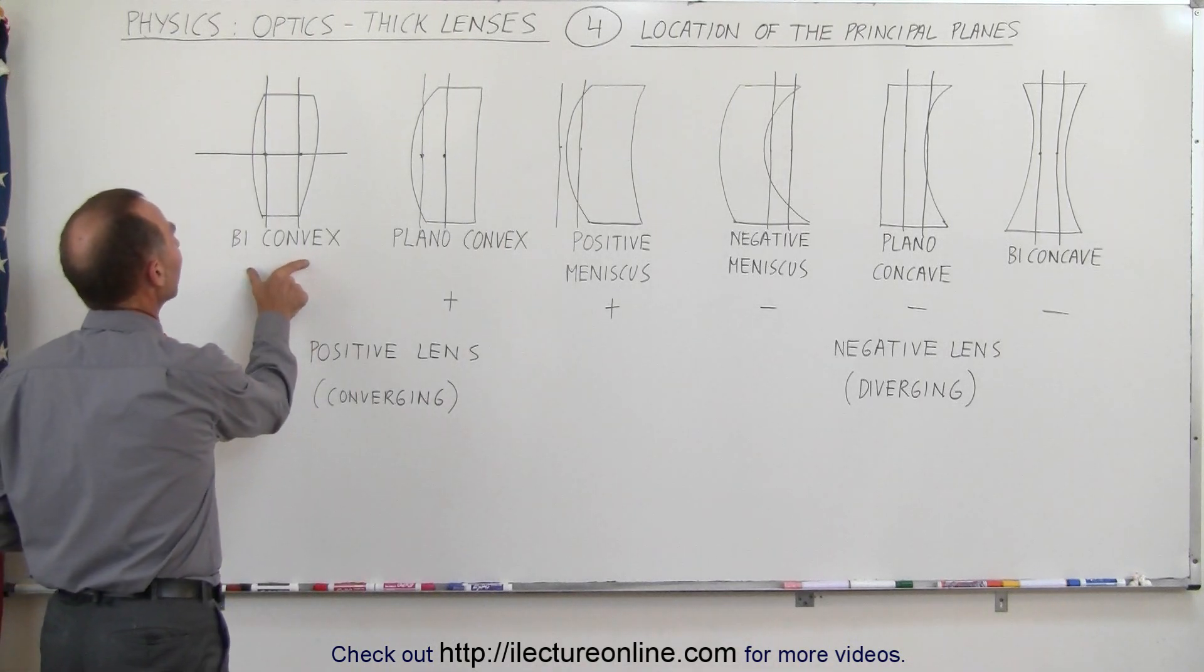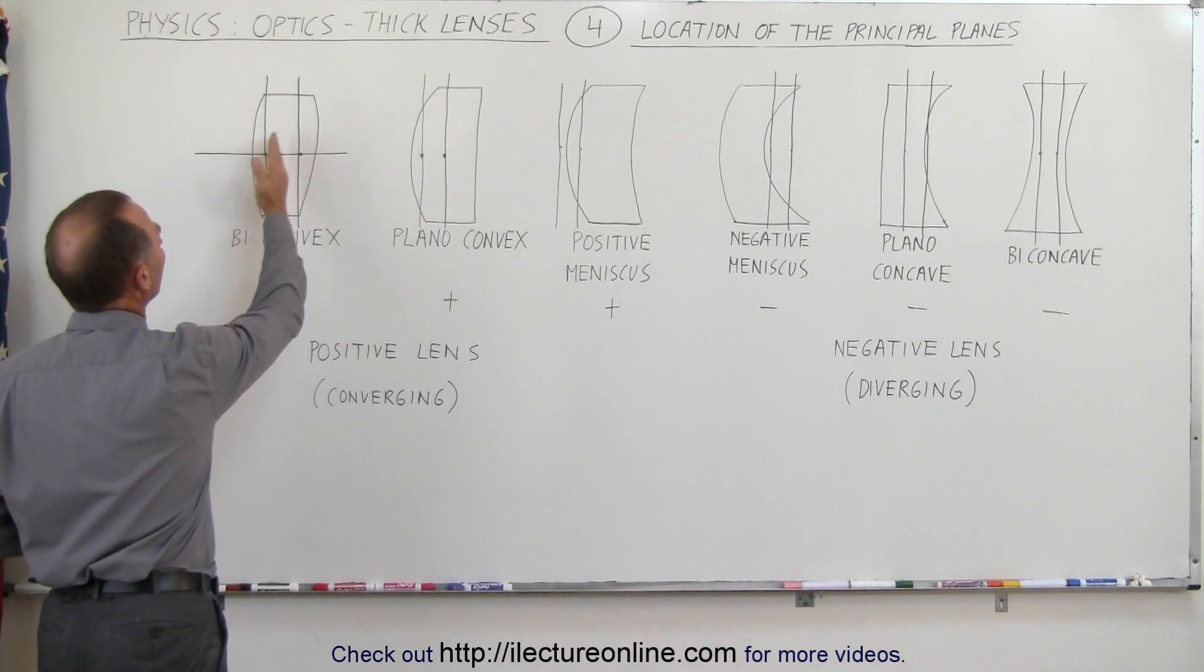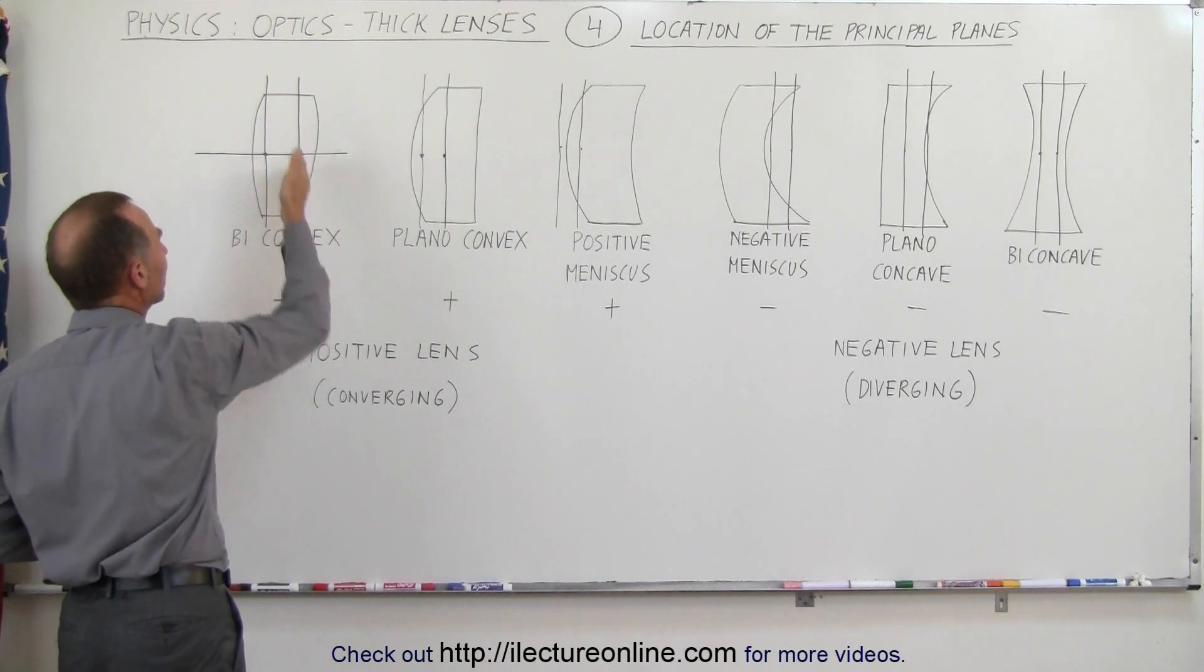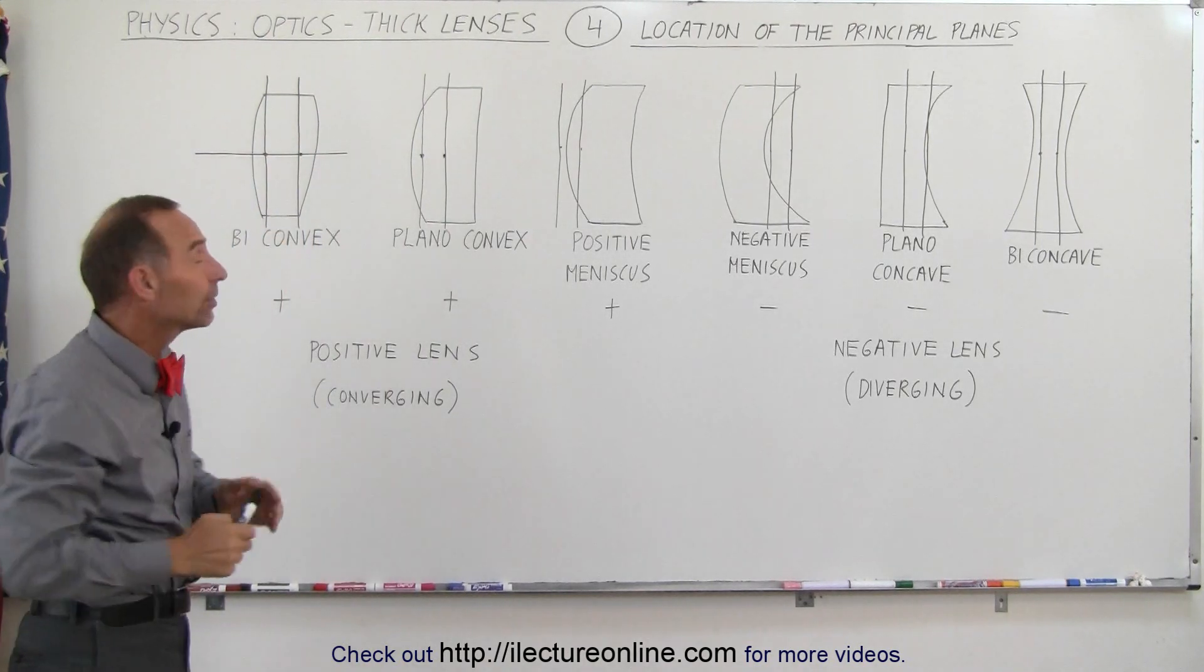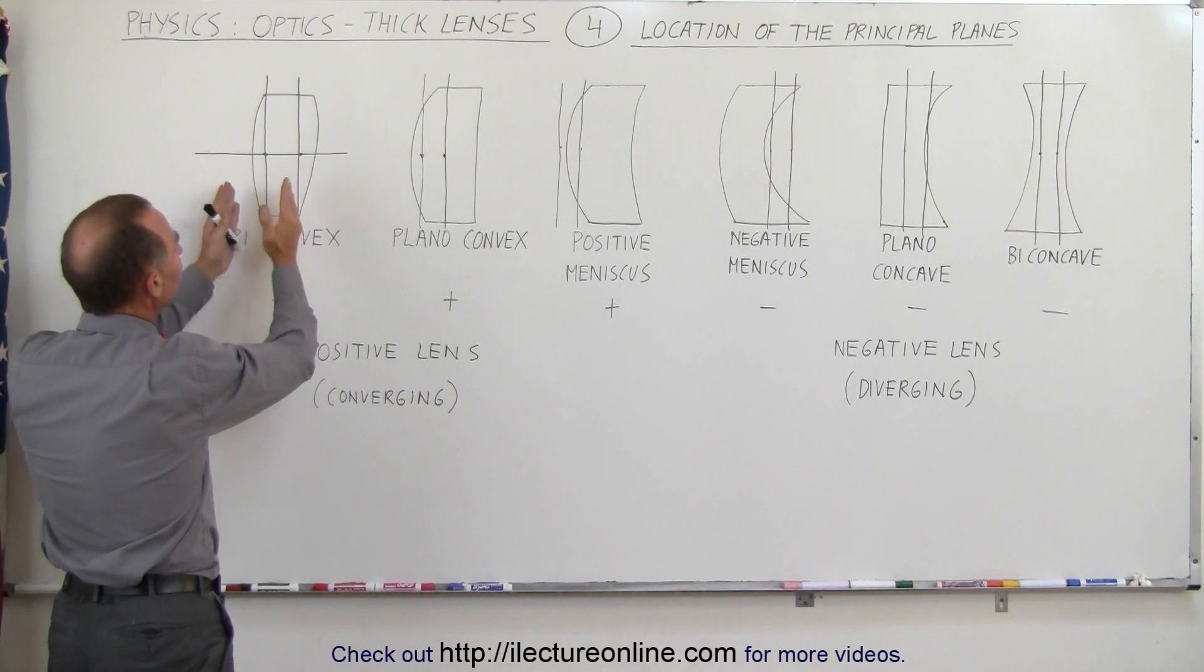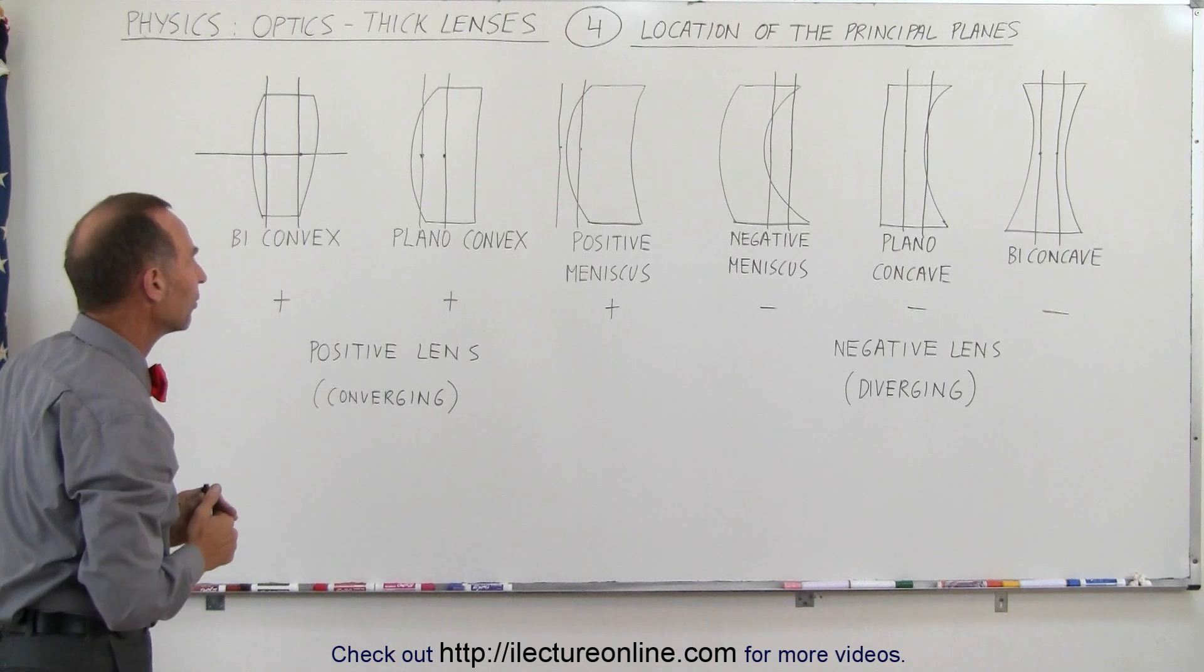In the case of a biconvex lens, the principal points are about equal distance away from the center of the lens. If the curvatures on both sides of the lens are identical, then the distance to both points will be identical and they'll be symmetrical about the center of the lens.